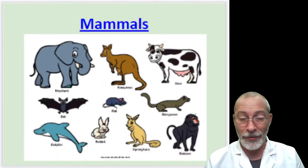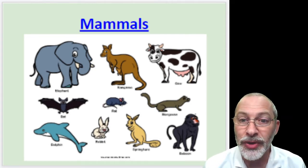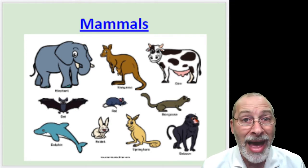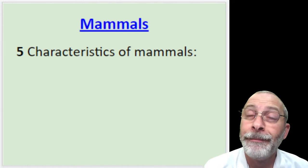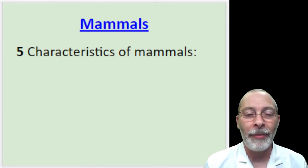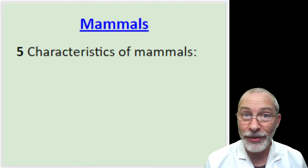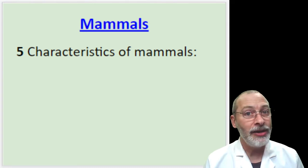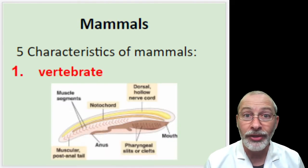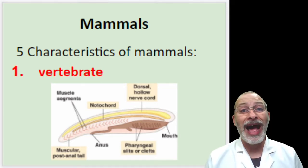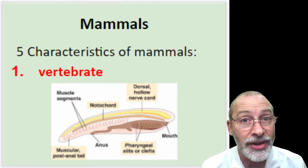Here's a picture of some common mammals — elephants, kangaroos, cows, etc. All of these are examples of mammals. We're going to discuss five characteristics that most mammals share. Starting with the first: all mammals are vertebrates. We know from last week what that means — vertebrates are organisms that have backbones.